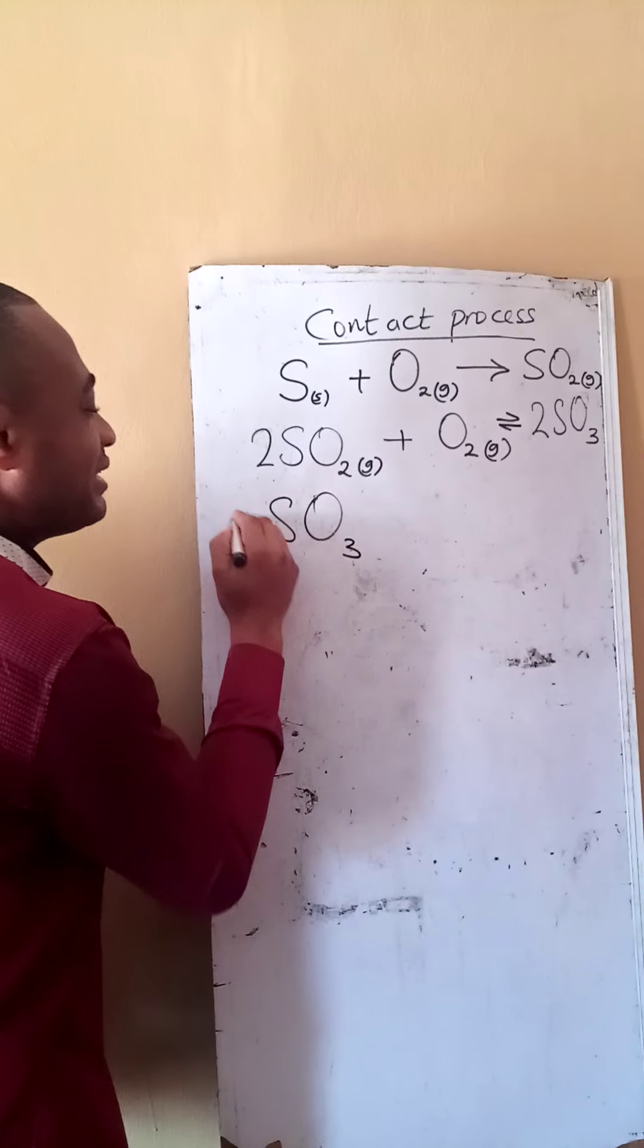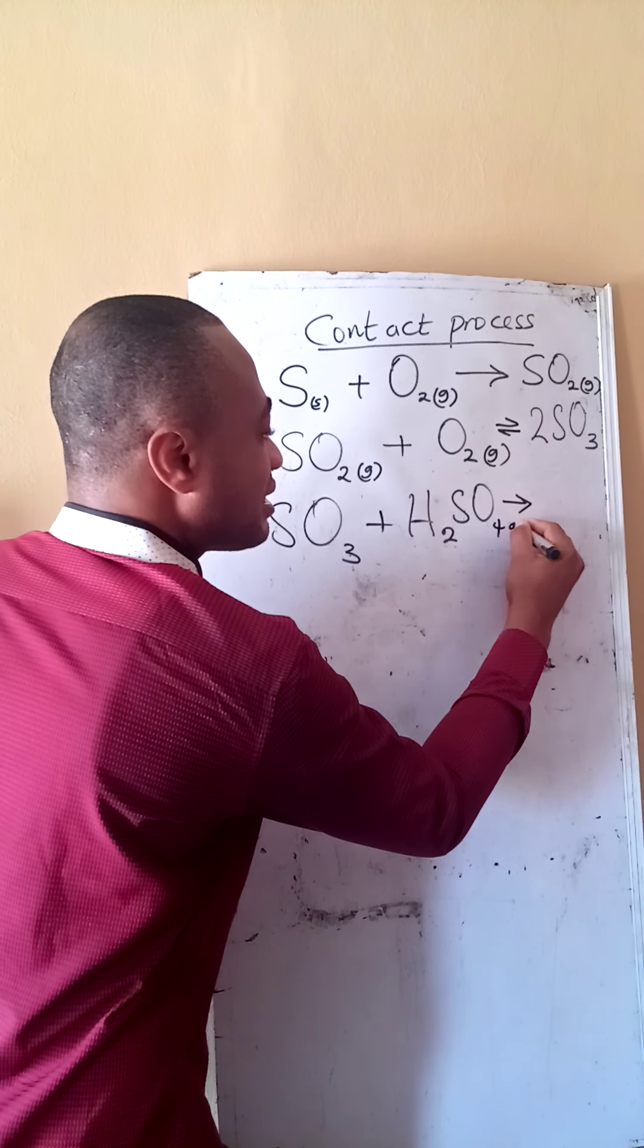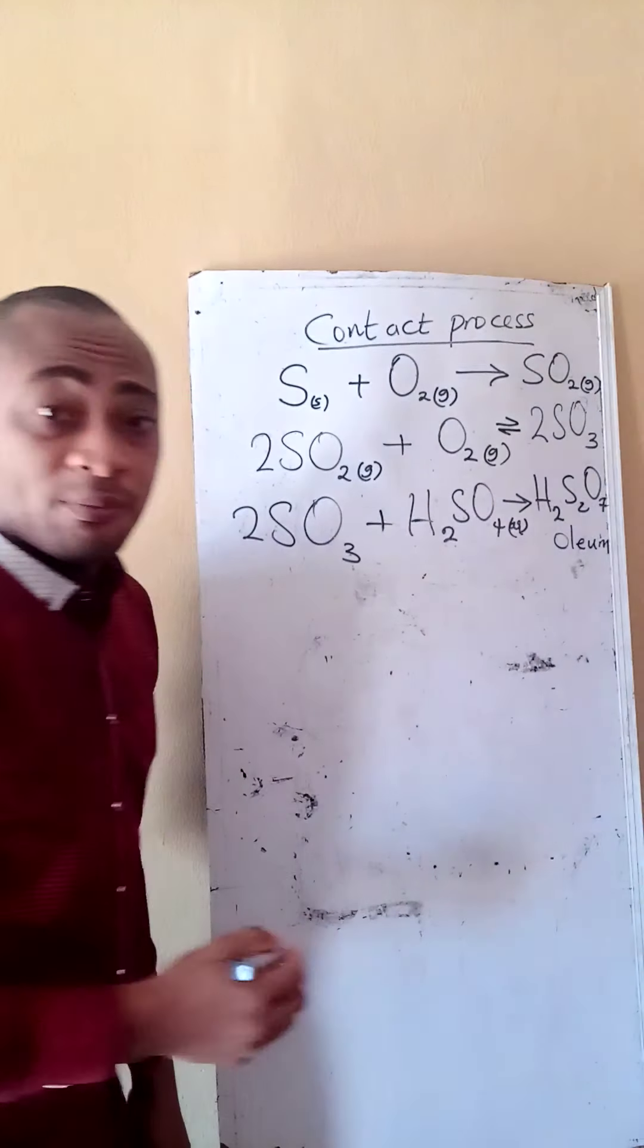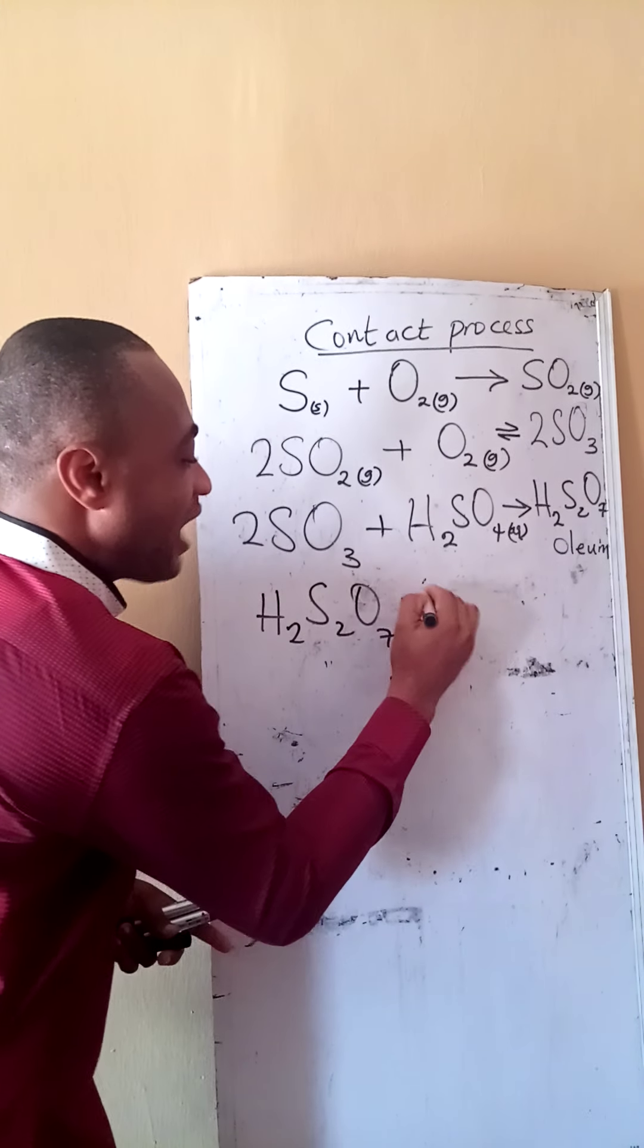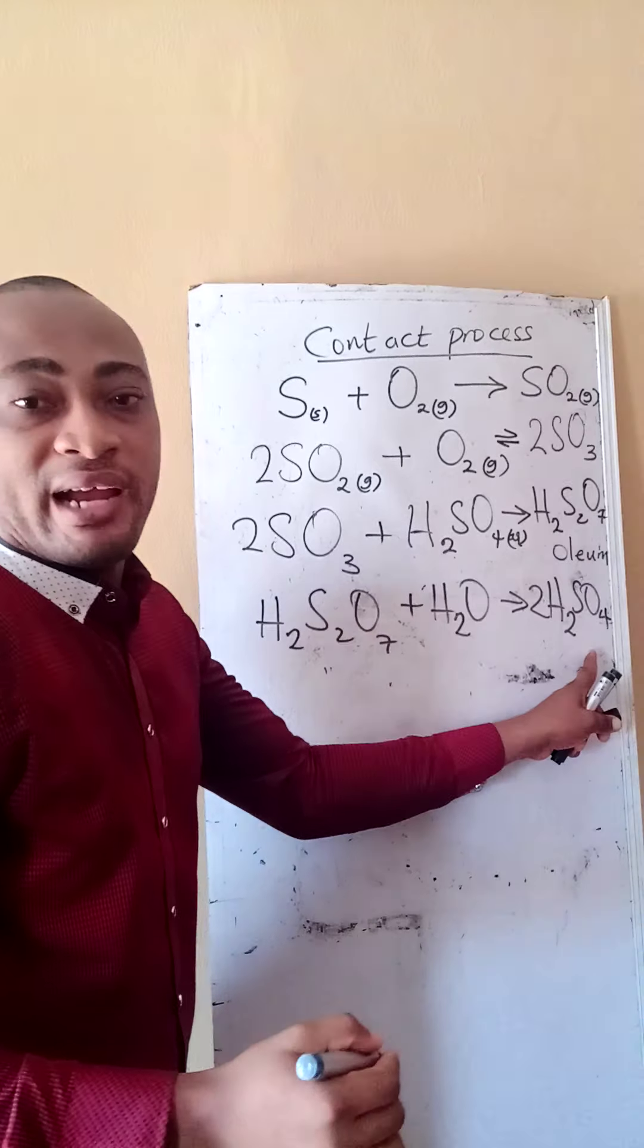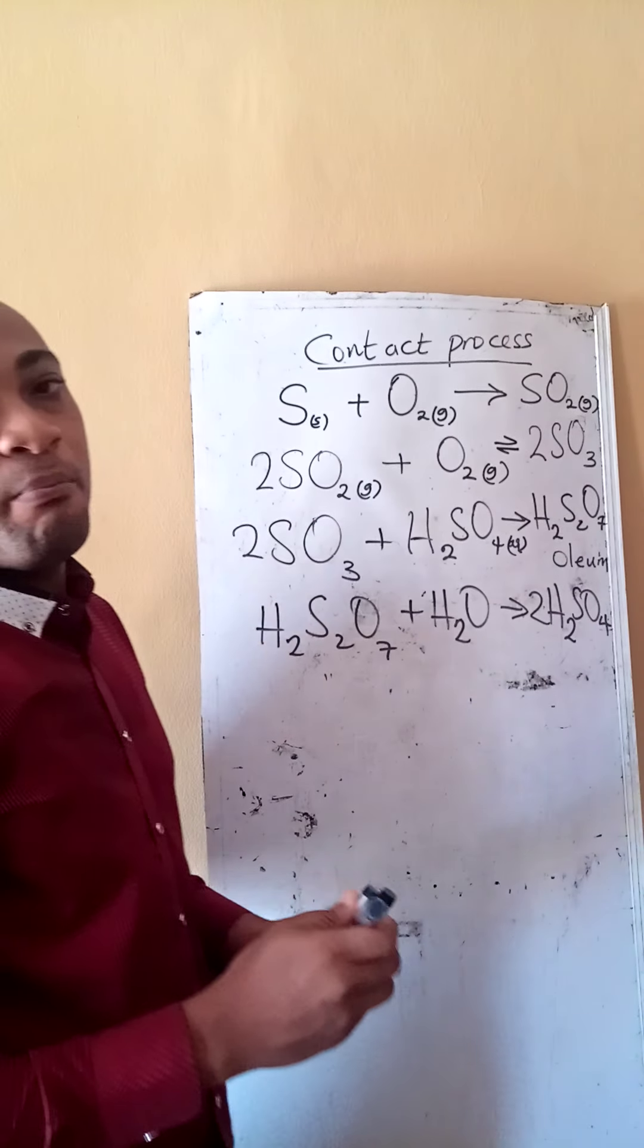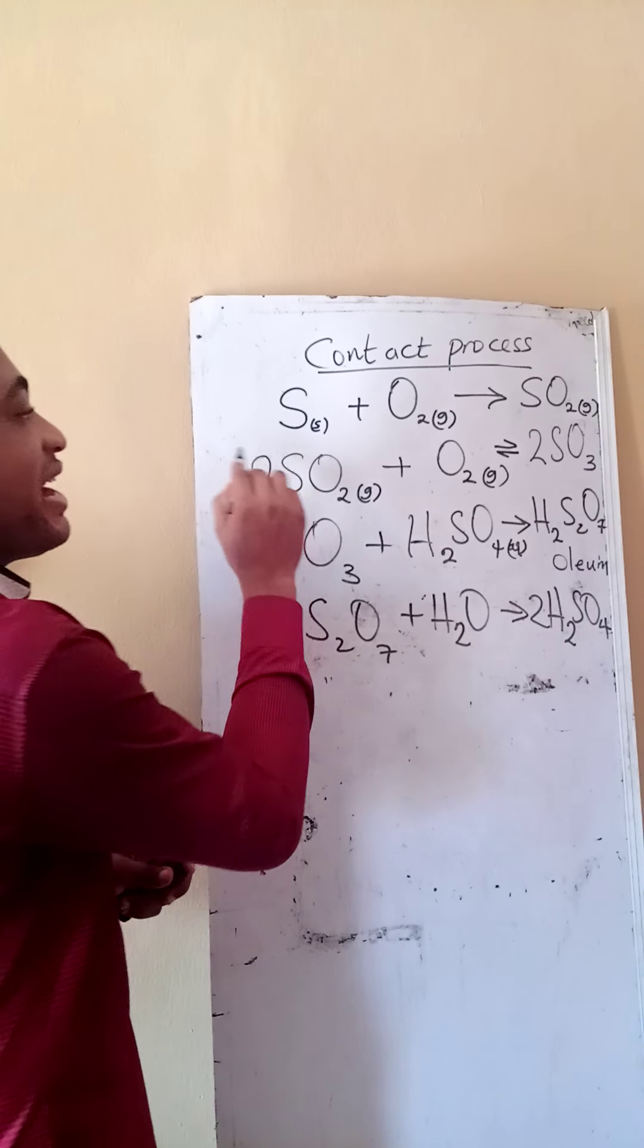Our sulfur trioxide will be passed through some amount of sulfuric acid to give us a compound H2S2O7, which we refer to as oleum or some texts tell you is disulfuric acid. Oleum will pass through water to give us the compound we want to manufacture, that is our tetraoxosulfate six acid. These four reactions are the reactions in the contact process.